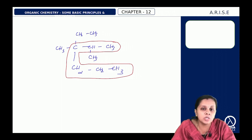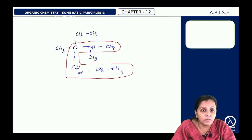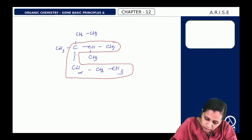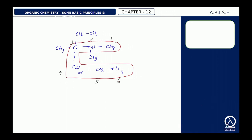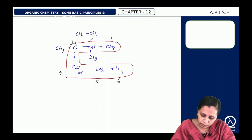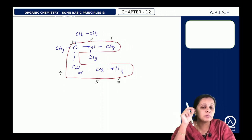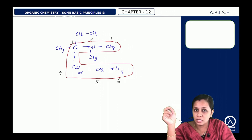Number in such a way that the substituents get the lowest possible number. The numbering will be 1, 2, 3, 4, 5, 6. Because if you number the other way, the substituents will get the fourth and fifth positions, whereas in this format they get the second and third positions. So this numbering format is chosen. Then name: prefix + word root + primary suffix + secondary suffix.